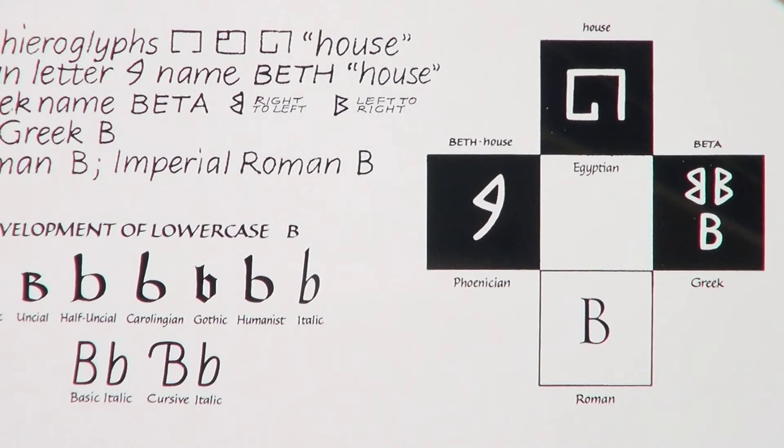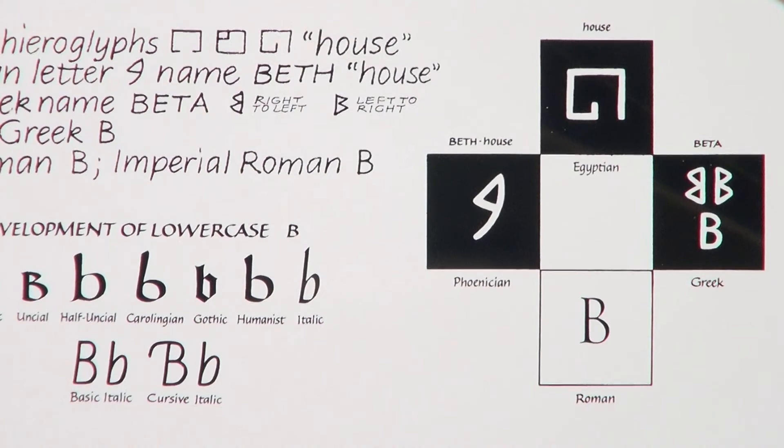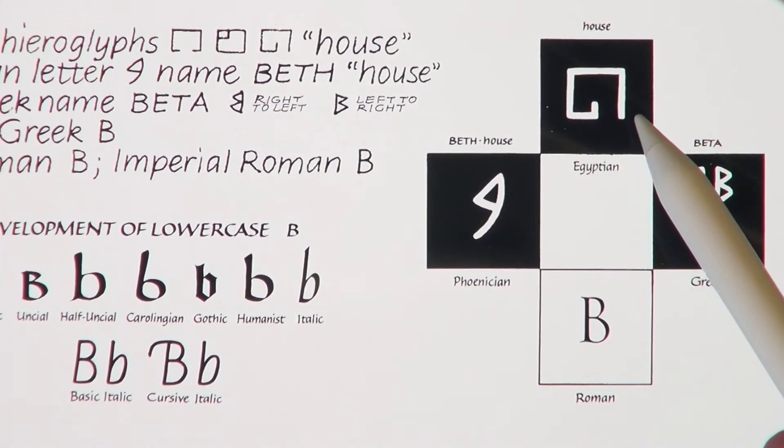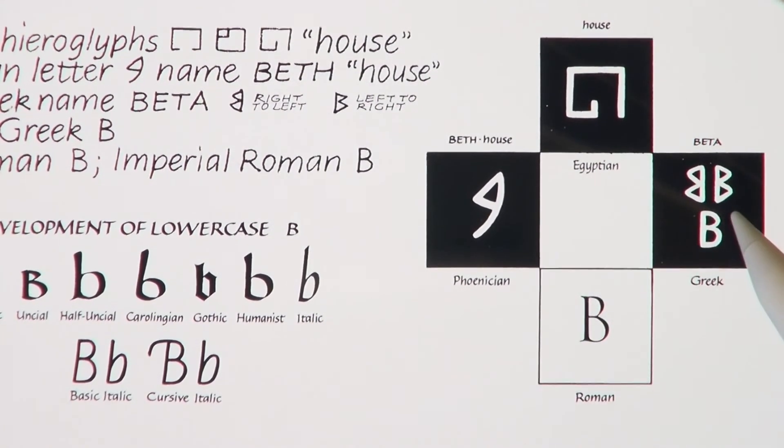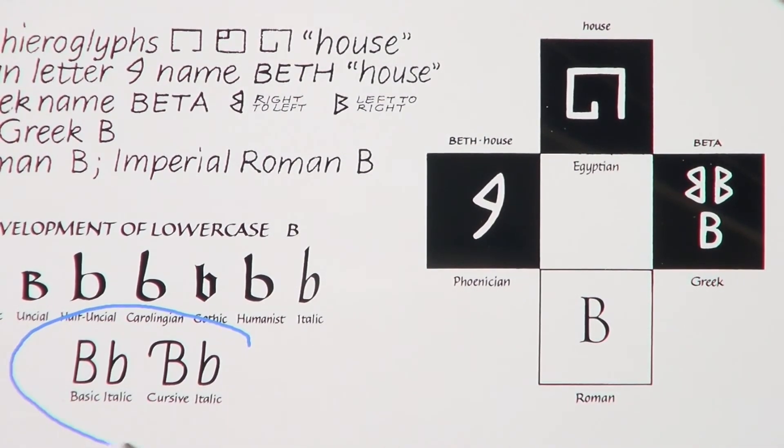If you have the Getty Dubé handwriting success app, the Write Now book, or the Getty Dubé italic handwriting series instruction manual, you can explore the rich history of letter b as it evolved from the ancient Egyptian symbol for house through the Greek beta all the way to modern italic.